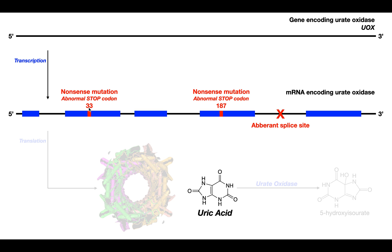A nonsense mutation is one where the mutation causes there to be an abnormal stop codon, and stop codons terminate protein synthesis rather than encoding amino acids. The aberrant splice site prevents translation altogether. Even if it didn't, the nonsense mutation at codon 33 would cause translation to truncate prematurely, producing a very short peptide that certainly won't function as urate oxidase.